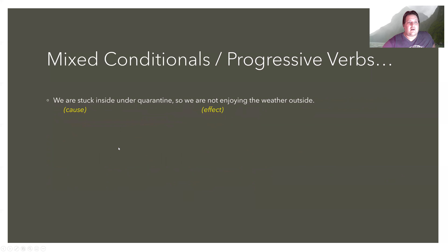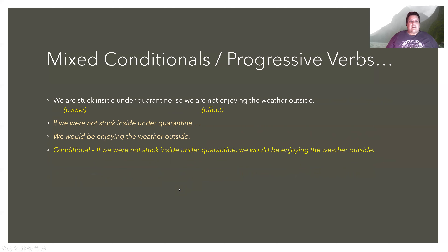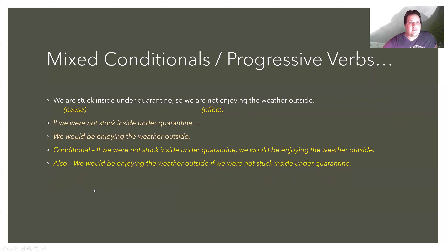Now let's add some progressives. 'We are stuck inside under quarantine, so we are not enjoying the weather outside.' The effect has a negative and a progressive. We simply get rid of the negative and change this into the progressive. The conditional clause is: 'If we were not stuck inside under quarantine,' and the second conditional result clause with a progressive is: 'we would be enjoying the weather outside.' So: 'If we were not stuck inside under quarantine, we would be enjoying the weather outside.' We can also switch the order around.